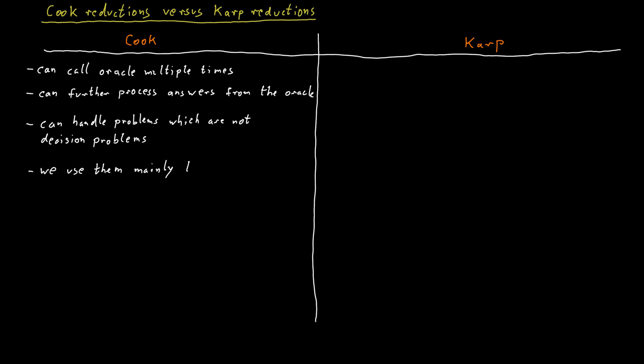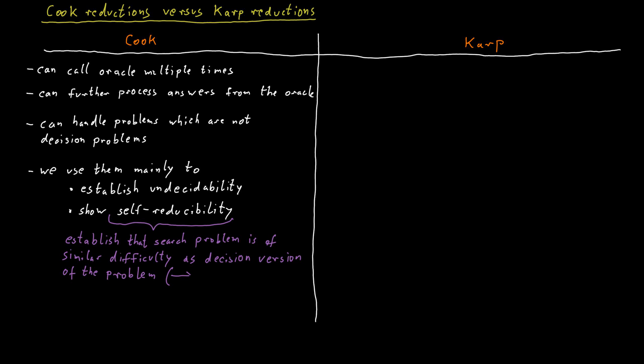They are in particular used to prove undecidability for problems. And later on we will also use them to do something like self-reducibility, which will basically mean that we can establish that a search problem is of similar difficulty as the corresponding decision problem. But this will become more clear later.